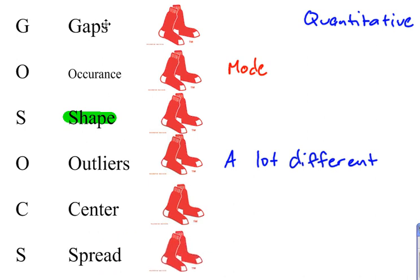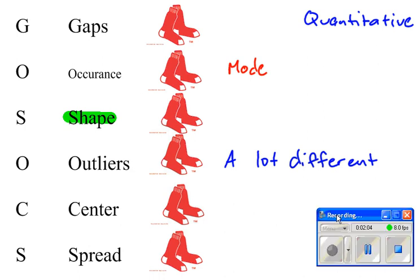So we have gaps, occurrence, shape, outliers, center, and spread. We're going to focus on each one of those individually over the next couple weeks. And if you watch these videos in order, you'll see that we'll go over all of these.